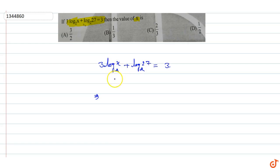This becomes log x cube base 2 plus log 27 base 2 is equals to 3. We know that log a plus log b, when base are equal, this will become log ab.